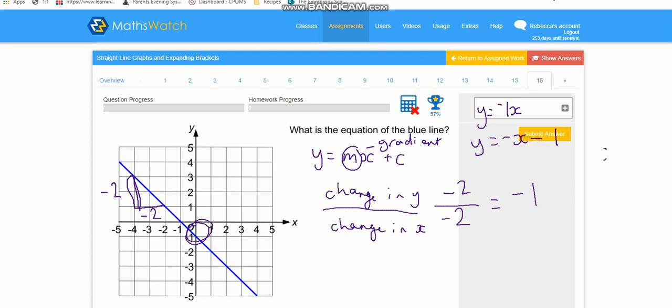So that would be your final answer for that one, okay? So you know that if a line is going, if it's crossing the y-axis in that direction, then you would have a minus gradient, whilst if it was a line crossing the y-axis in that direction, it would have a positive gradient.